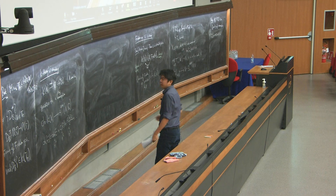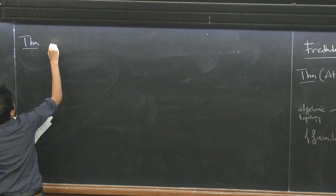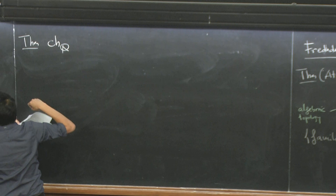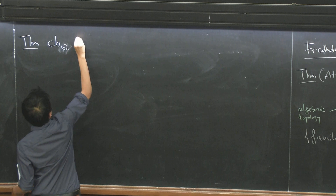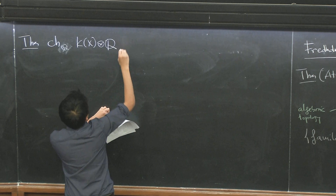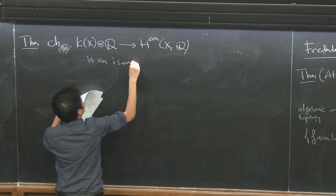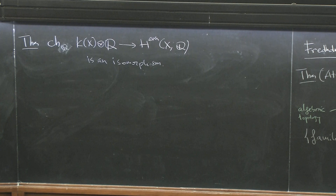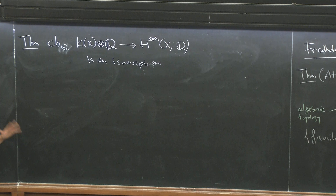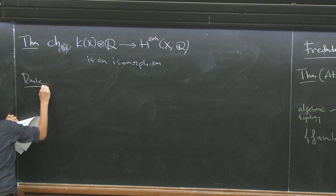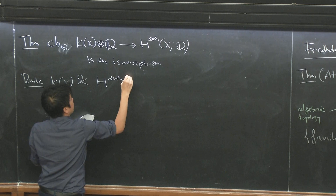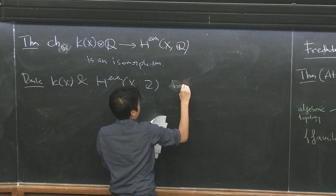If you rationalize — tensor K(X) with ℚ — the Chern character is an isomorphism. So K-theory is defined using this complicated construction with vector bundles and Grothendieck rings, but if you look rationally, you don't really get much more information than cohomology. As a remark, if you look at the integral version, K-theory and cohomology can have very different torsion. The order of the torsion might be arbitrarily large, so at integral coefficients K-theory contains different information.